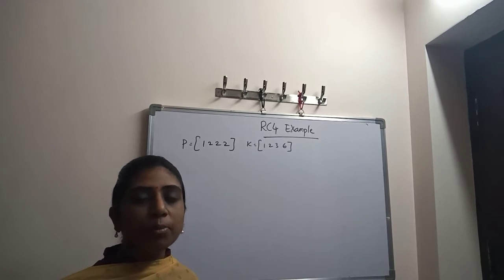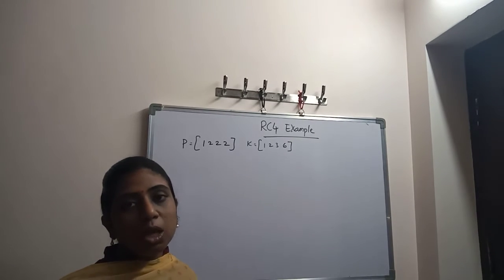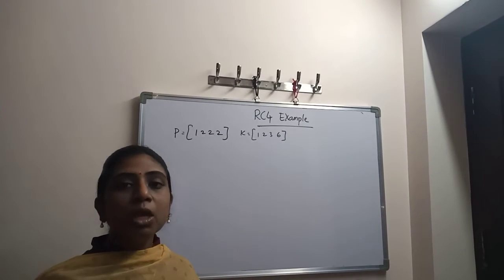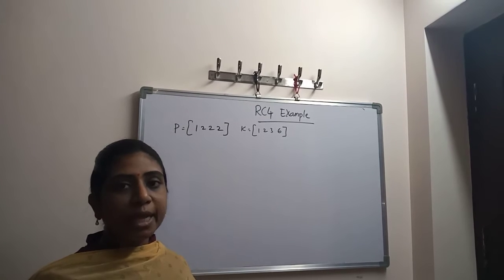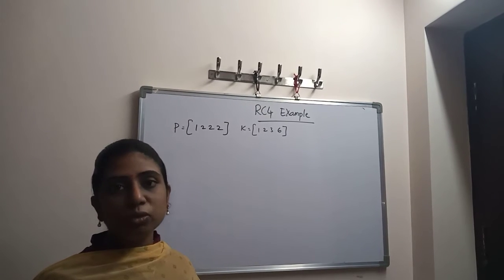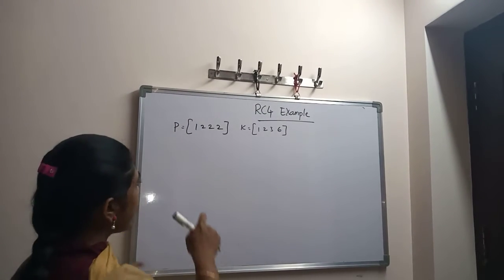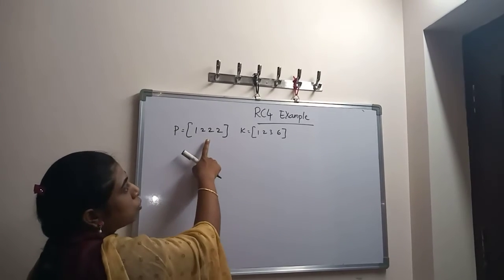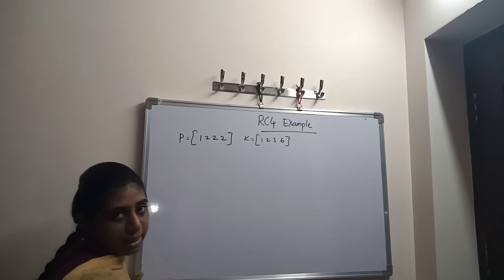Today we are going to discuss an RC4 example. We are going to take 8-bit data and perform the process. The plain text is given as 1222 and the key value is 1236.